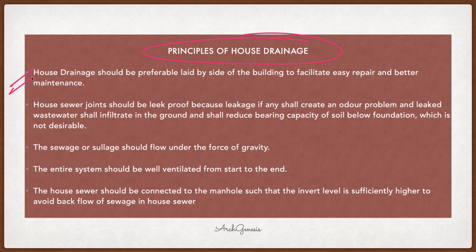The principle of house drainage: house drainage should preferably be laid by the side of the building to facilitate easy repair and better maintenance. It should be leak proof — because any leak will create a foul odor problem, and leaked wastewater will infiltrate the ground and reduce the bearing capacity of soil below the foundation. Sewers and sludge should flow under the force of gravity. The entire system should be well ventilated from start to end. The house sewer should be connected to the manhole such that the invert level is sufficiently high to avoid backflow of sewage into the house.